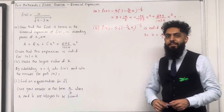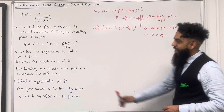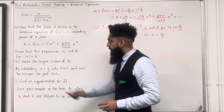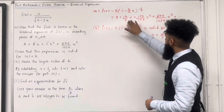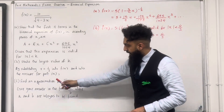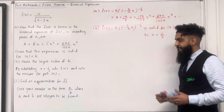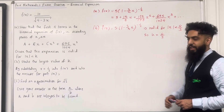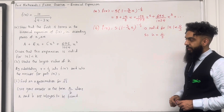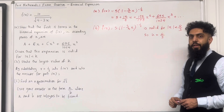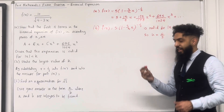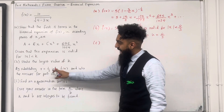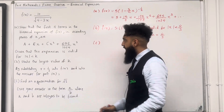Let's move on to the final part of this exam question. By substituting x equal 1 over 3 into f(x) and into the expansion from part A, part C asks us to find an approximation for square root 3, giving the answer in the form A over B where A and B are integers. Let's have a look at the solution to part C. We start by substituting x equal 1 over 3 into f(x).